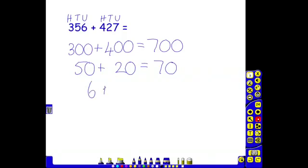Six add seven is our remaining number sentence. Six add seven is 13. We've added our hundreds, we've added our tens, we've added our units.